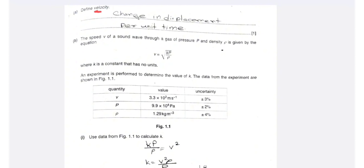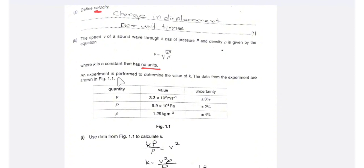The speed v of a sound wave through a gas of pressure p and density rho is given by the equation: speed v is equal to k times the square root of p over rho, where p is the pressure, rho is the density, and k is a constant with no units. An experiment is performed to determine the value of k, and the data from the experiment is shown in figure 1.1.